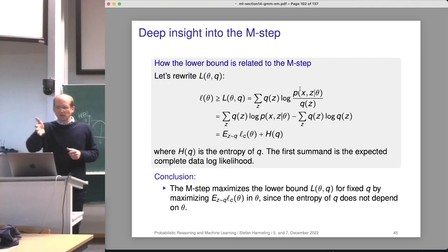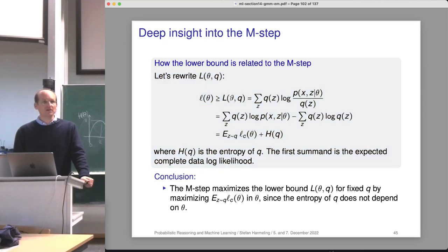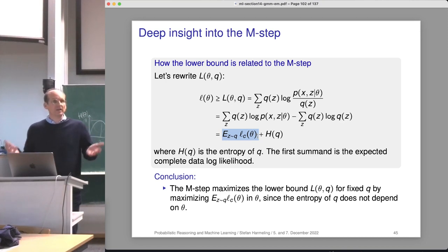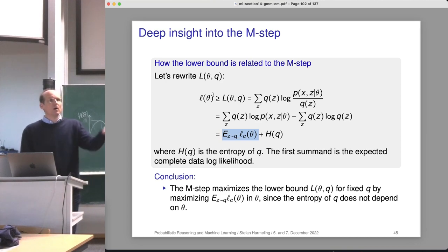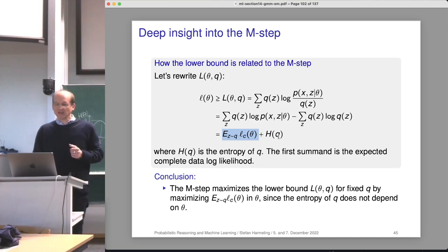Let's get back to the deep insight into the M-step. Our goal is to maximize the incomplete log likelihood, and we found a nice lower bound using Jensen's inequality. We massaged the expression to get interpretable terms: the expected complete data log likelihood — which is what we actually maximize in our algorithm — and a constant entropy term. By maximizing that, we're provably increasing the lower bound for the log likelihood. The other term doesn't depend on theta, so it's constant during the M-step.